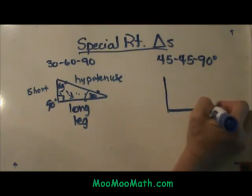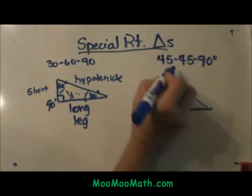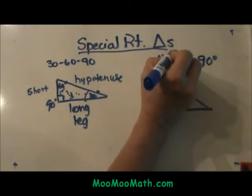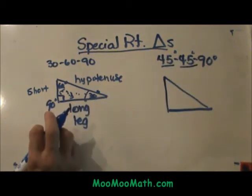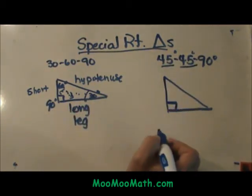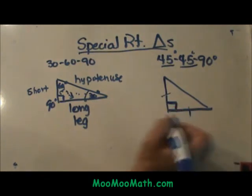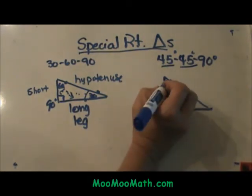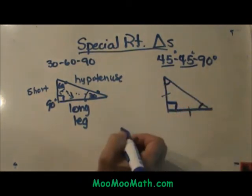Now on a 45-45-90, notice we have two angles that are congruent, therefore we have an isosceles triangle. So I am going to draw an isosceles triangle, that is a triangle with two sides that are the same length, and then these two angles are my 45 degree angles.